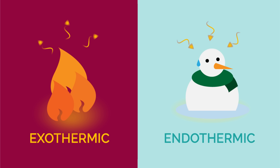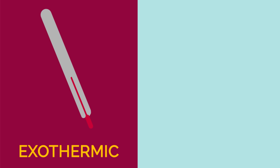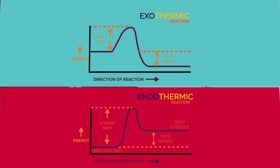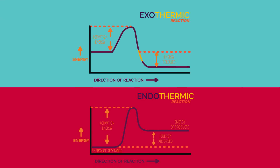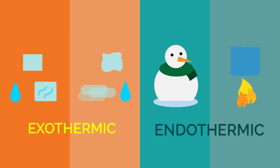So there you have exothermic and endothermic reactions. All you need to remember is that exothermic reactions give out energy and endothermic reactions take in energy. Both can be detected with a thermometer — in exothermic reactions the surroundings get hotter and in endothermic reactions the surroundings get colder. Exothermic reactions start with more energy and end with less, while endothermic reactions start with less energy and end with more. Freezing and condensation are exothermic because bonds need to be made, giving out energy. Melting and boiling are endothermic because bonds are broken, requiring additional energy — think of the snowman again. Finally, exothermic reactions are more common.